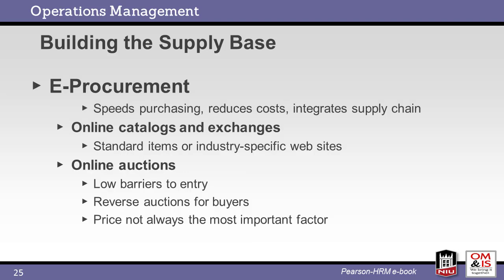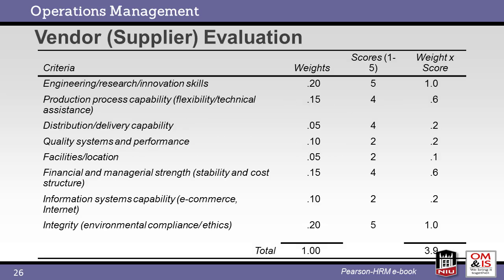With the ready availability of the internet, e-procurement is common and in some cases required by some companies. Walmart, for example, requires suppliers to receive demand data electronically while providing fulfillment and billing data in return. Many suppliers provide online catalogs to facilitate purchasing and may participate in online auctions for commodity items. Here's an example of a weighted supplier evaluation method. The criteria for selection are listed on the left, each with its own weighting based upon the priority of that criterion. A given supplier would receive a score for each on a scale from 1 to 5. The weights are multiplied by the score and then summed to calculate the overall score for that supplier, and the scores of different suppliers are compared to select the best partner.